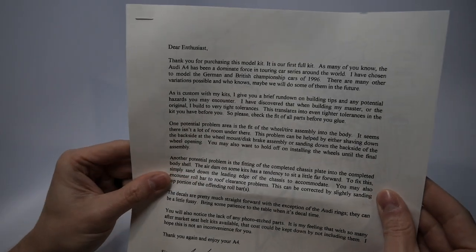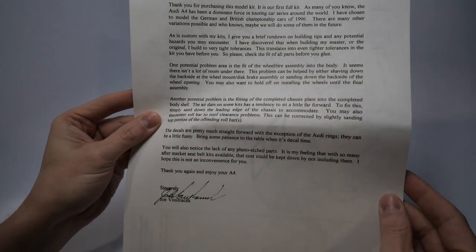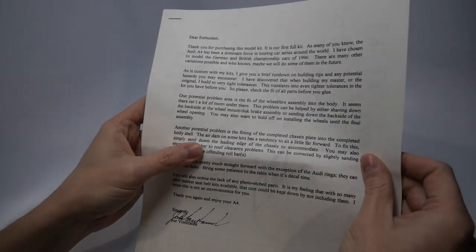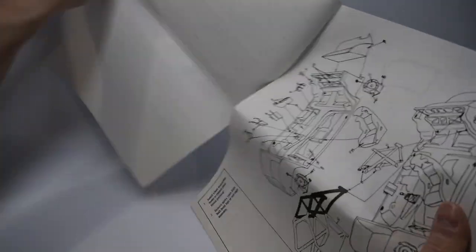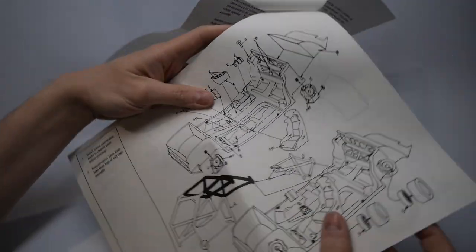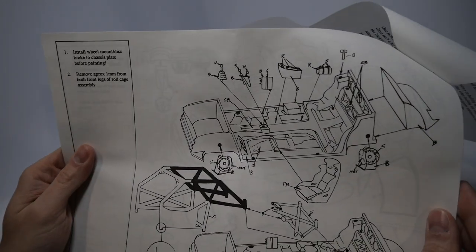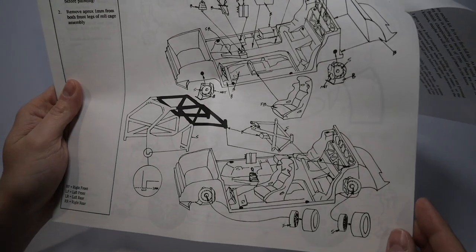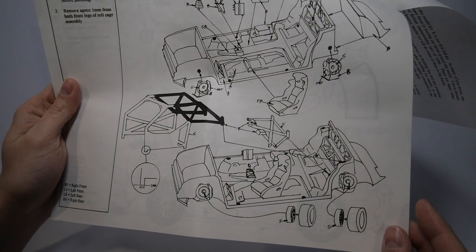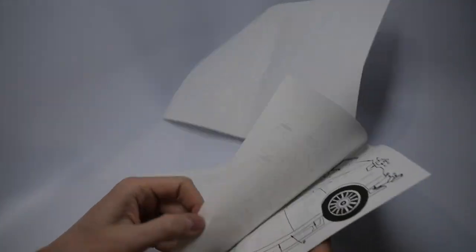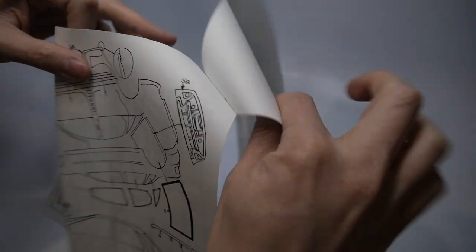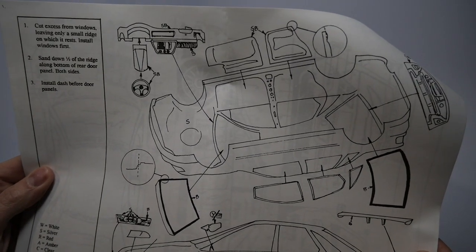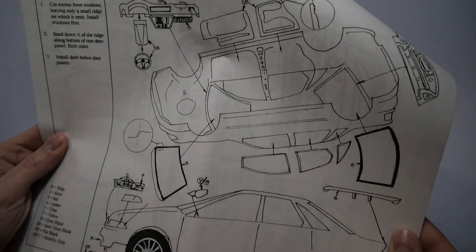The instruction manual is a must have if building this kit. Joe gives you all of the issues the kit has. You can pause if needed to read this information Joe states, however I will give it to you in a quick rundown as we peruse the instruction manual. Joe creates the masters with very tight tolerances. It is best to always dry fit and check for any fitment issues and correct prior to painting the parts and dealing with the issues after. The wheel tire assembly may have an issue with clearance under the body. With that, it is suggested to sand and shave the backside of the wheel mount until fitment is correct. You may not want to install until after assembly.